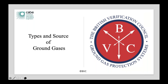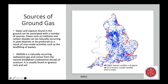Types and sources of ground gas: gases and vapors can be found in the ground and associated with a number of sources. Methane and carbon dioxide can be naturally occurring, or they can be results of manmade activities such as landfills or coal mines. There are roughly 20,000 historic landfill sites across the UK, and if you add all the coal mines that have been filled, you're talking about a lot of contamination.